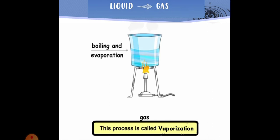Next, liquid changes into gas. The water on further heating changes into water vapor, which is a gas. When we boil water, steam rises up from the boiling water. Steam is water in a gas form. Vaporization can happen by evaporation and boiling. So the process by which a liquid changes into a gas is called vaporization.